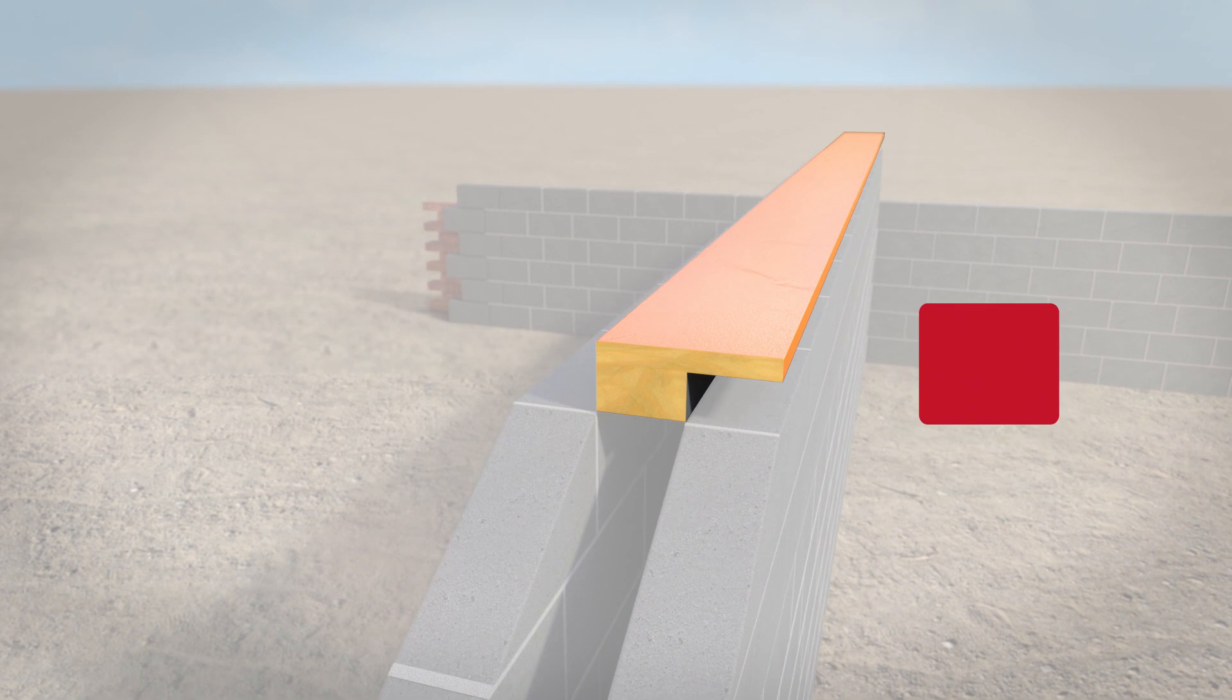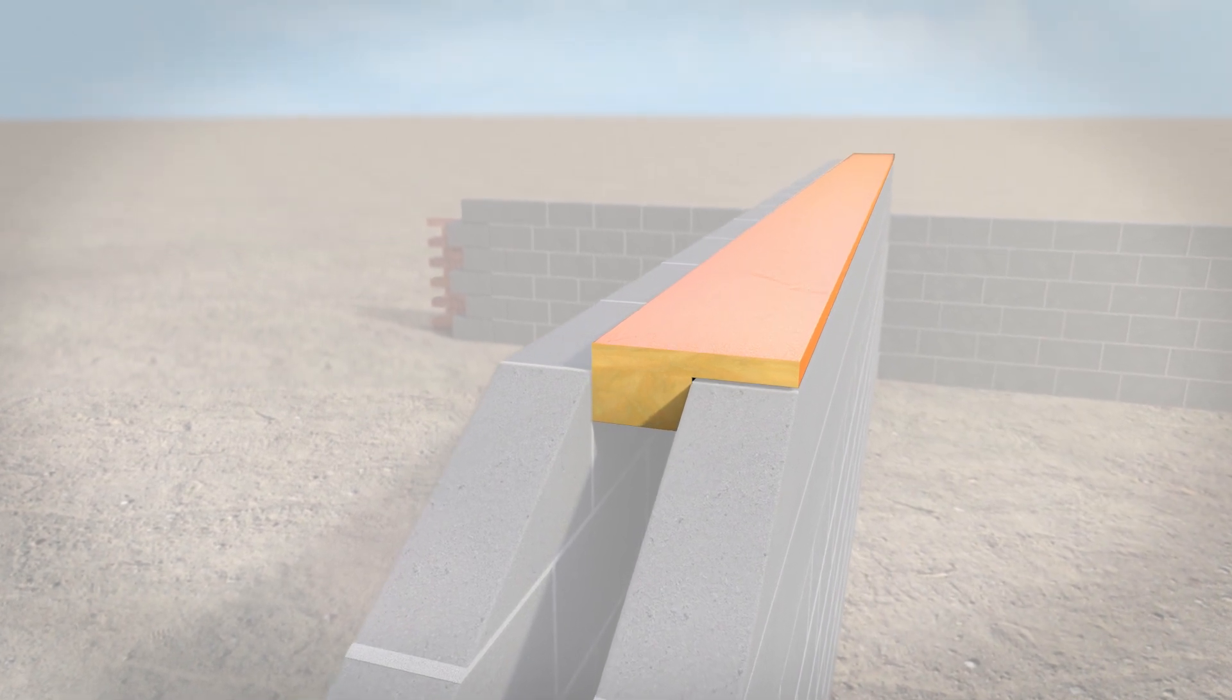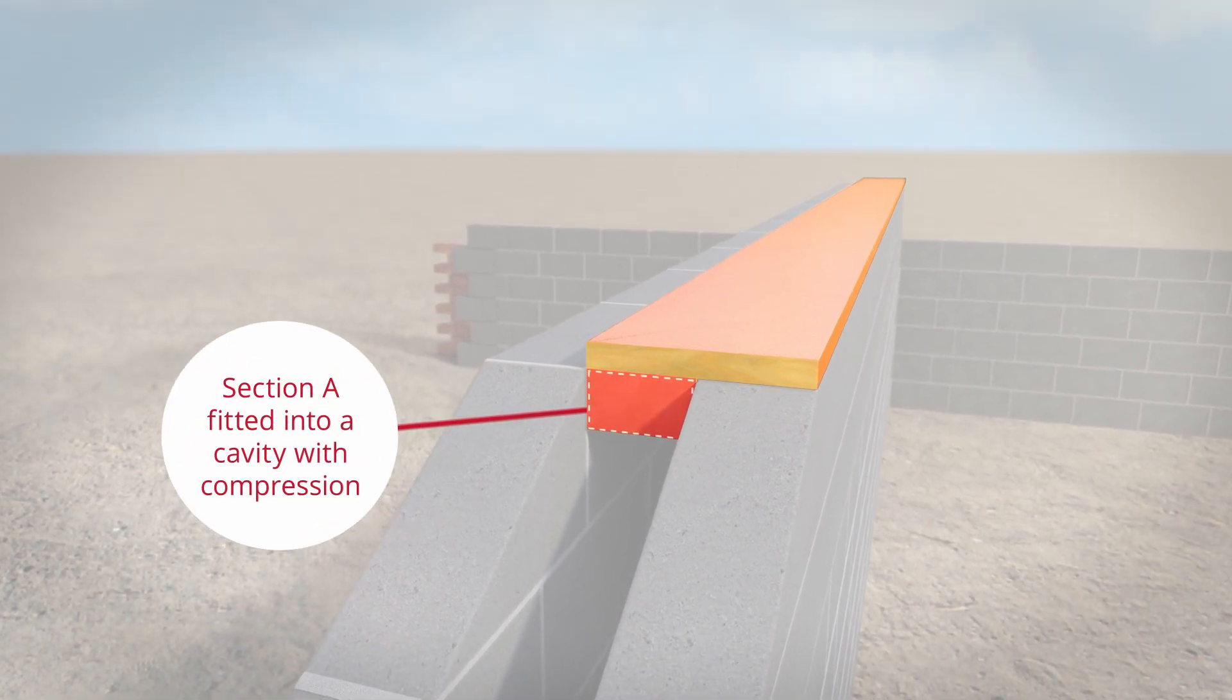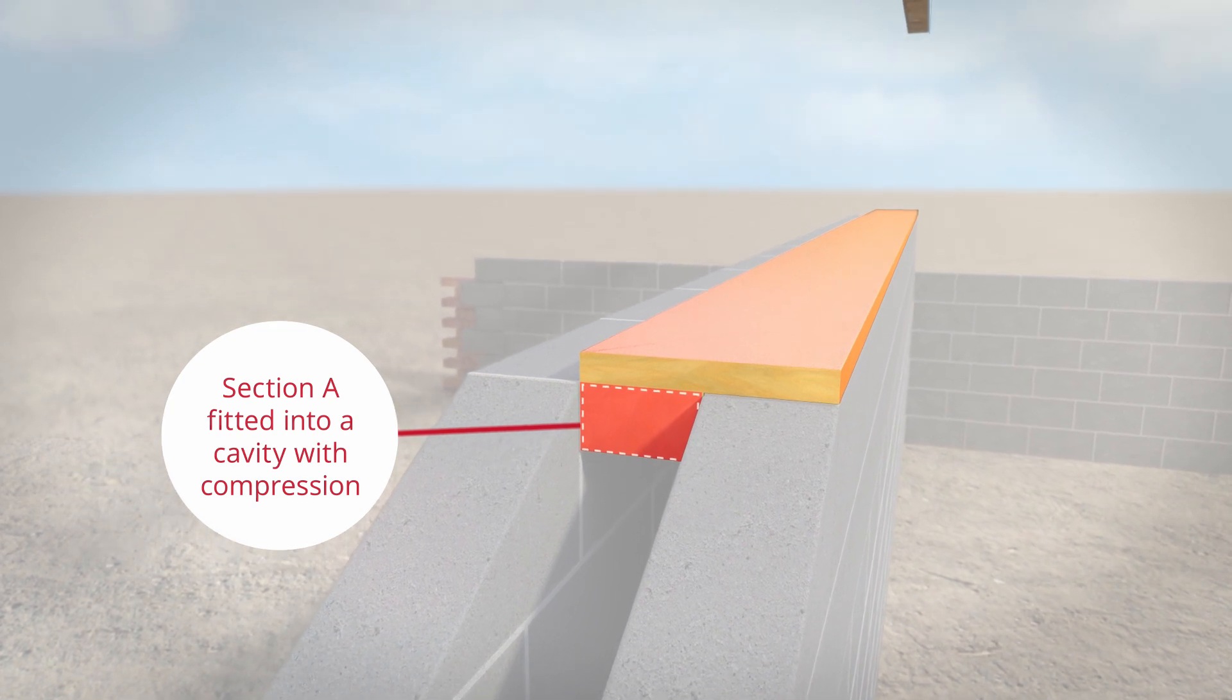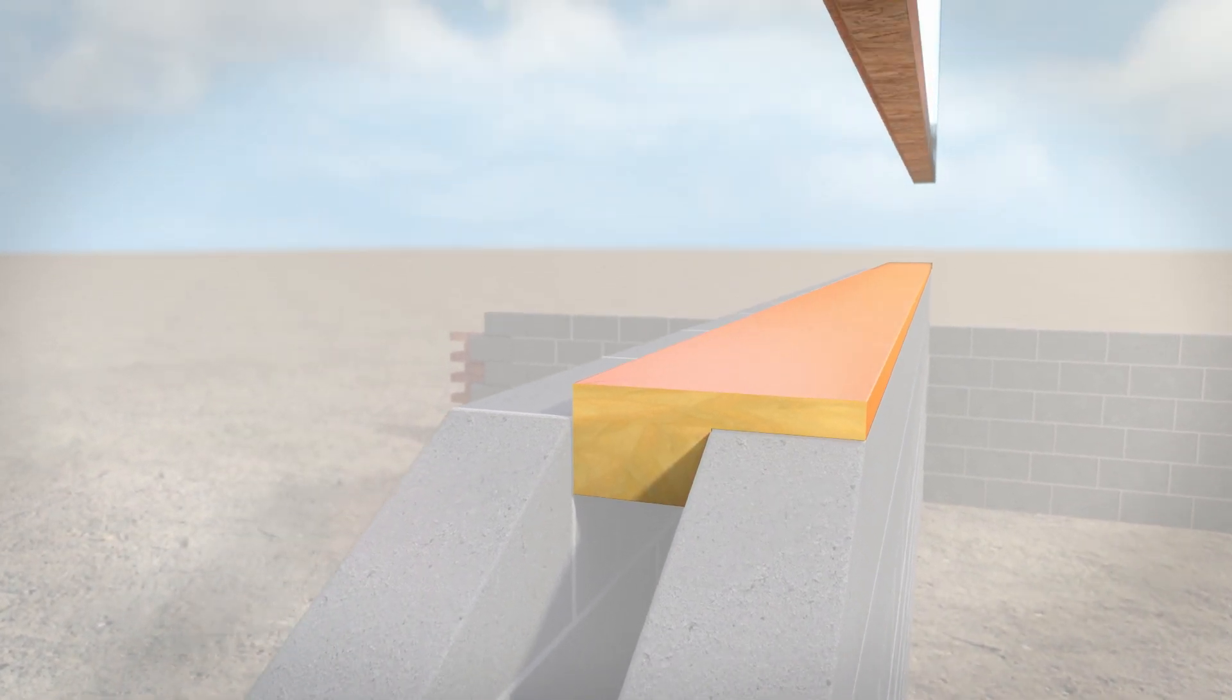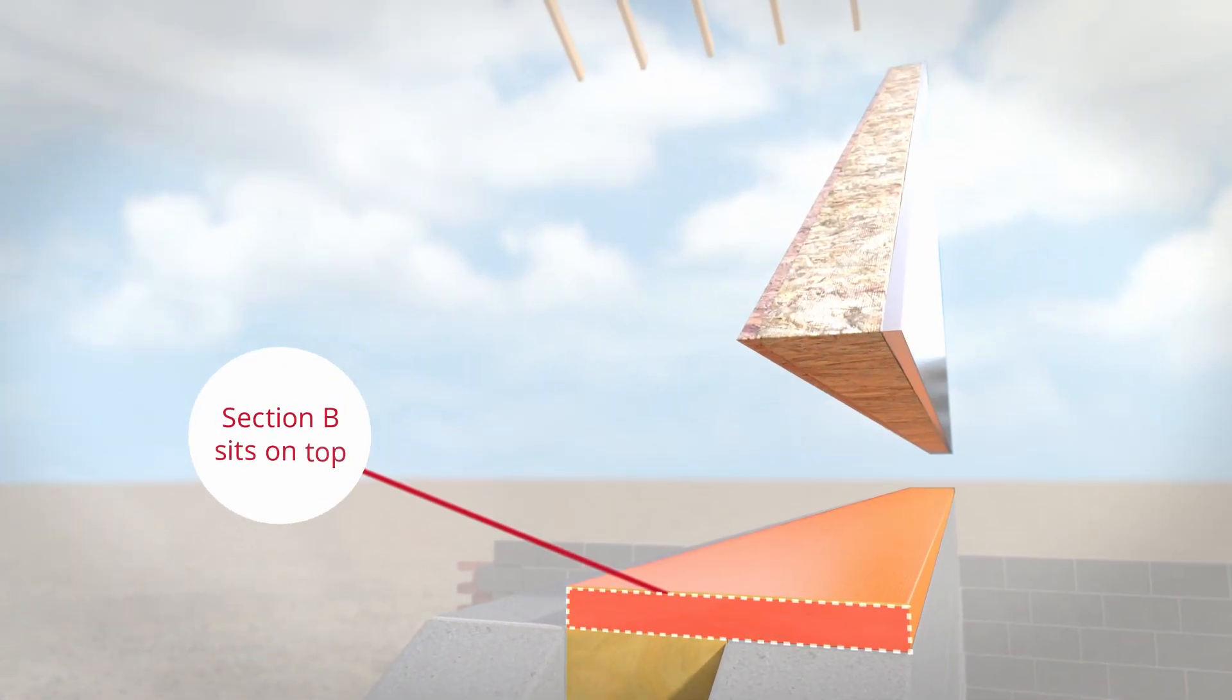The Arc Spandrel Barrier provides fire stopping between party wall blockwork and the spandrel panel. This lower density Section A is compression fitted into the cavity, and the higher density Section B sits on top of the party wall. The spandrel panel is then positioned on top of the spandrel barrier.